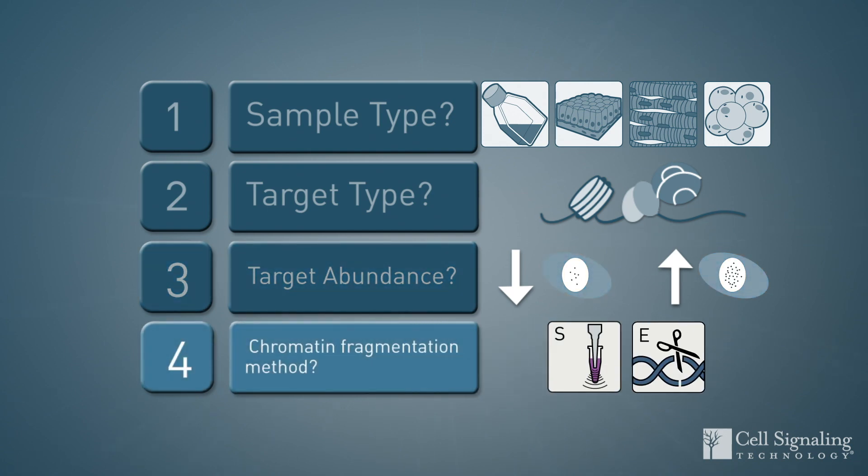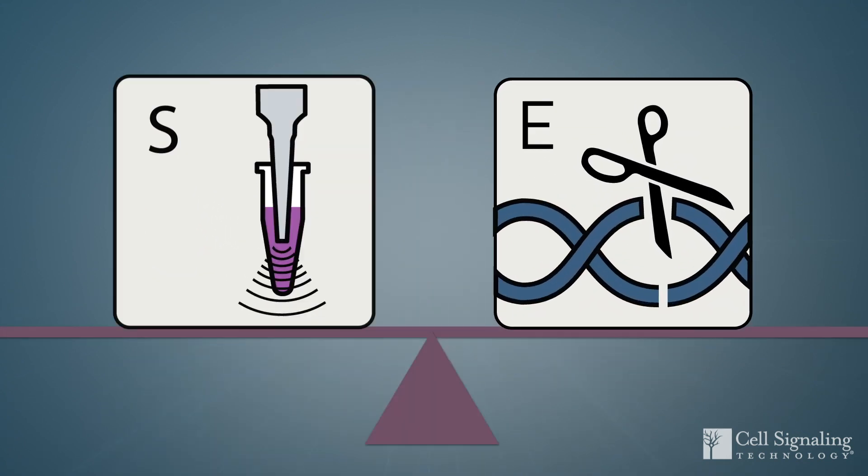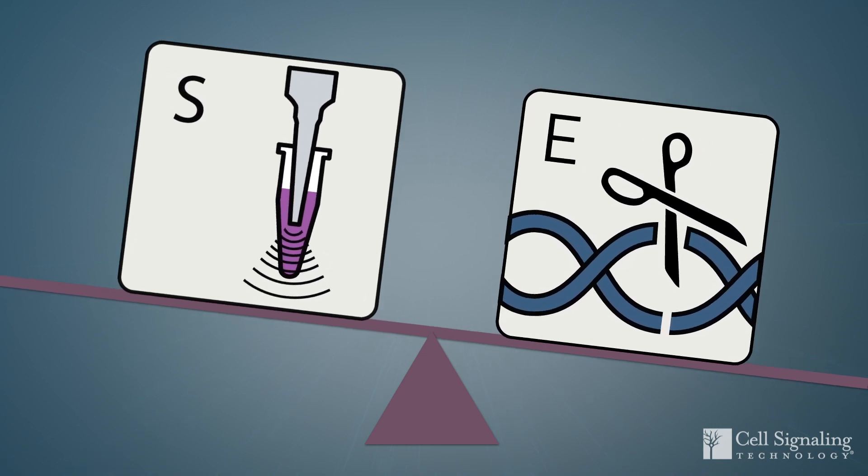In many instances, you can use either sonication or enzymatic digestion. We'll also introduce some scenarios in which one method for chromatin fragmentation outperforms the other.